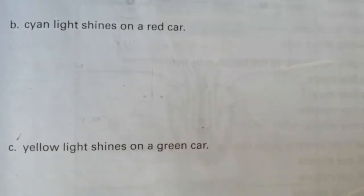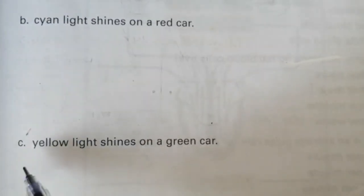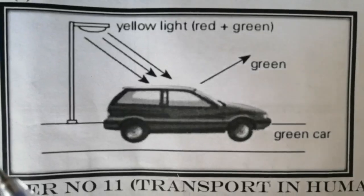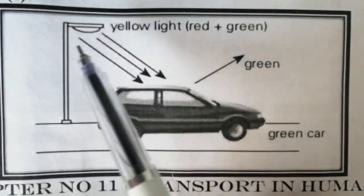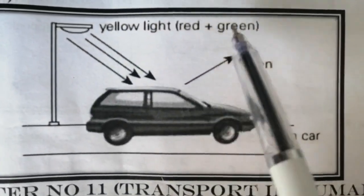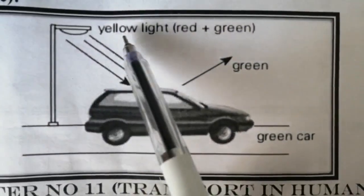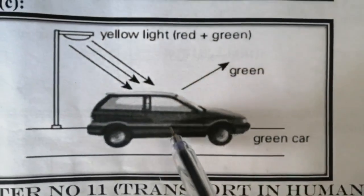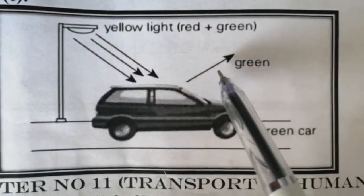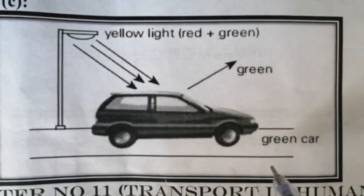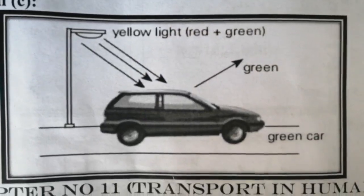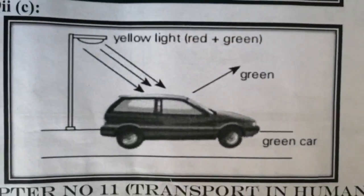Question number 10, part 2C: yellow light shines on a green car. Yellow light is the combination of green light and red light. When this yellow light falls on the green car, it will absorb the red light and reflect the green light. So the green car will appear green under the yellow street light. Thank you.